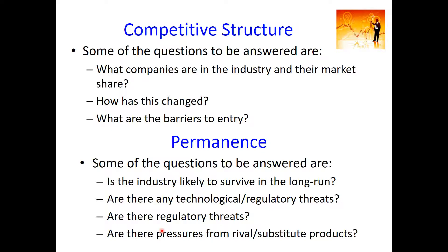Another area of industry analysis is examining whether an industry is likely to be viable in the future, which requires looking at the competitive structure. This involves asking how competitive the industry is currently, what is the degree of saturation, how many different marketplaces are there within the industry, and how the industry has changed over time. Another way to examine competitive structure is identifying whether there are barriers to entry — forces that prevent new entrants. For example, the telecommunications industry requires huge upfront capital investment, which creates a significant barrier to entry.